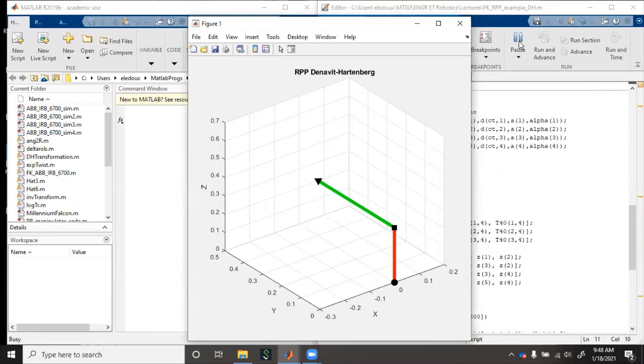You can see joint 3 goes out, joint 2 goes up, and then joint 1 rotates.